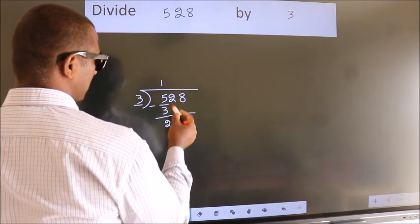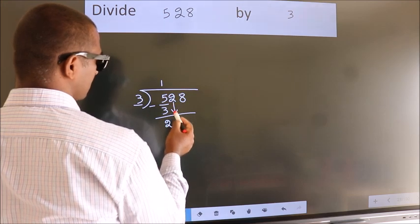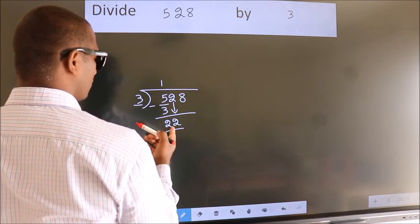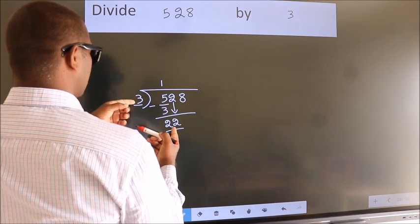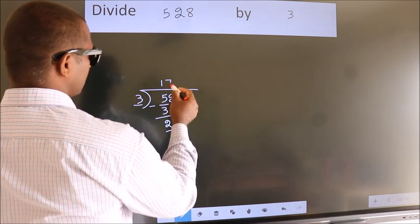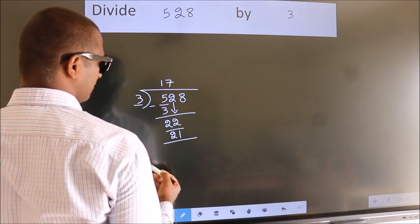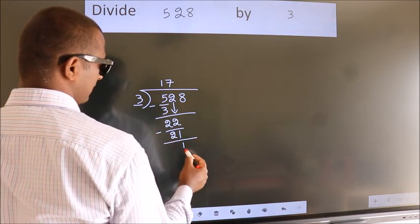After this, bring down the beside number. So 2 down, so 22. A number close to 22 in 3 table is 3 7s 21. Now we subtract, we get 1.